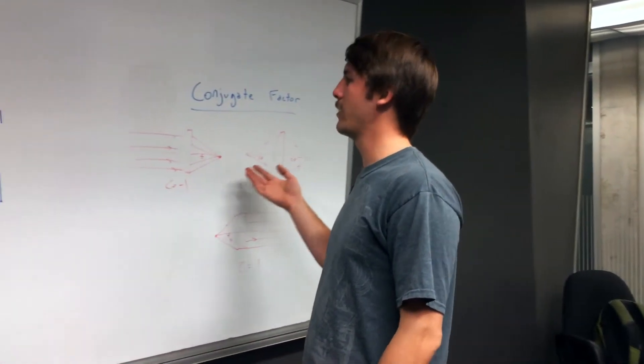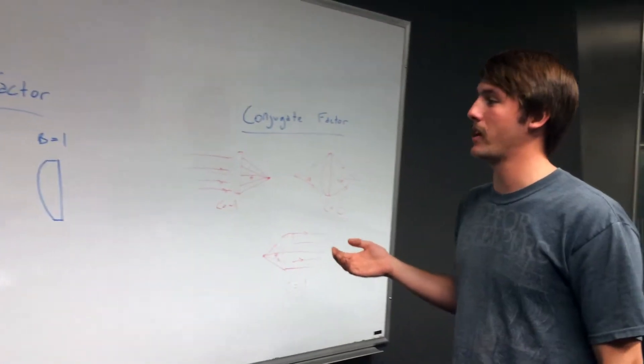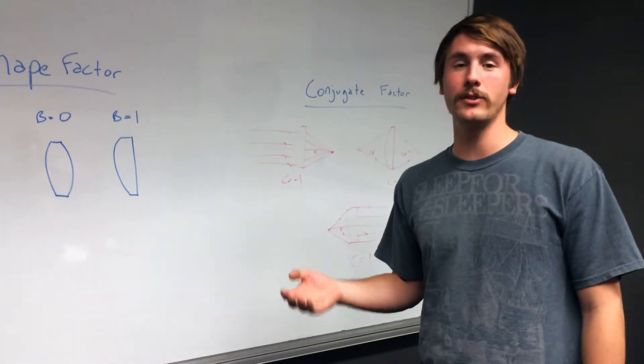Spherical aberration is dependent on both conjugate and shape factor. So if we know one of them, we can optimize the other to get the lowest amount of spherical aberration.